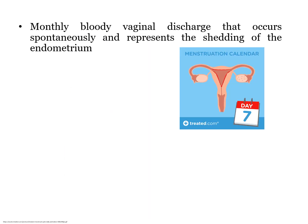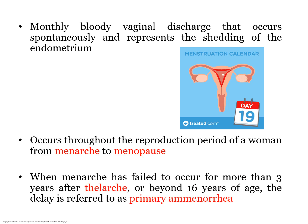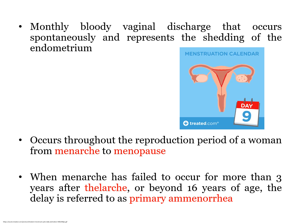Menstrual cycle takes place usually once a month. It involves the shedding of the endometrium or the uterine lining, followed by blood discharge. This cycle continues throughout the reproduction period of a woman, which is from menarche. Menarche is the onset of the menstrual cycle, or in other words, the very first menstruation experienced by a woman. When menarche has yet to occur after 3 years or more after telarche — the onset of breast development — or beyond 16 years old, this delay is known as primary amenorrhea.